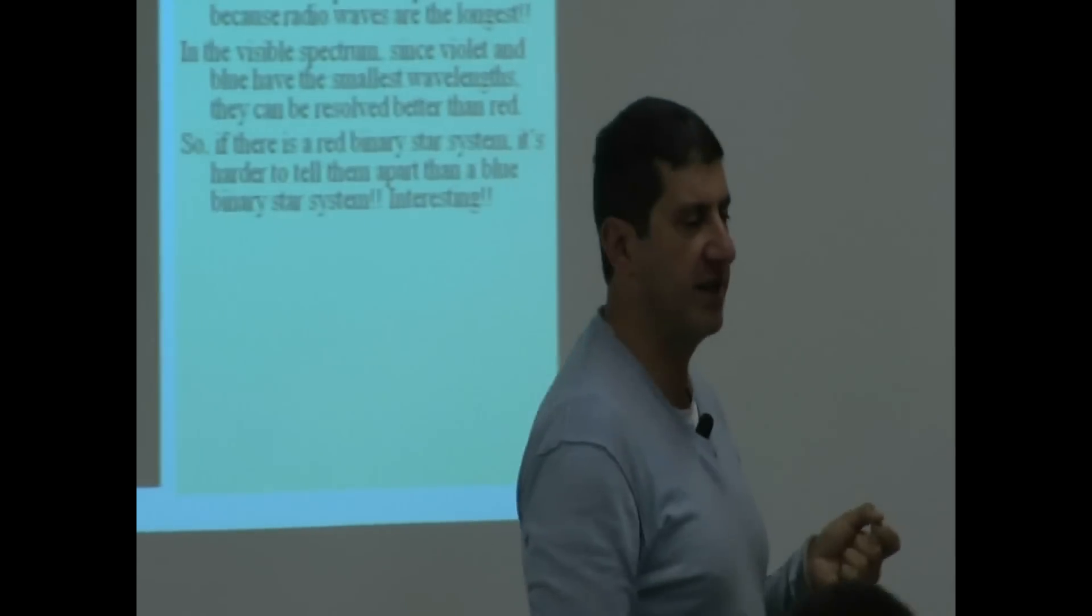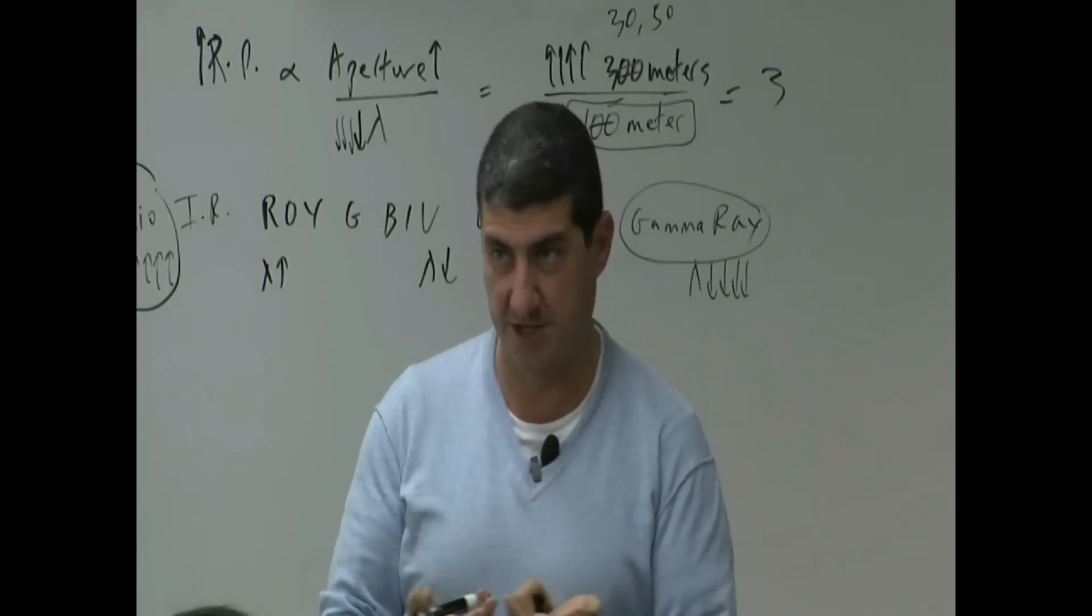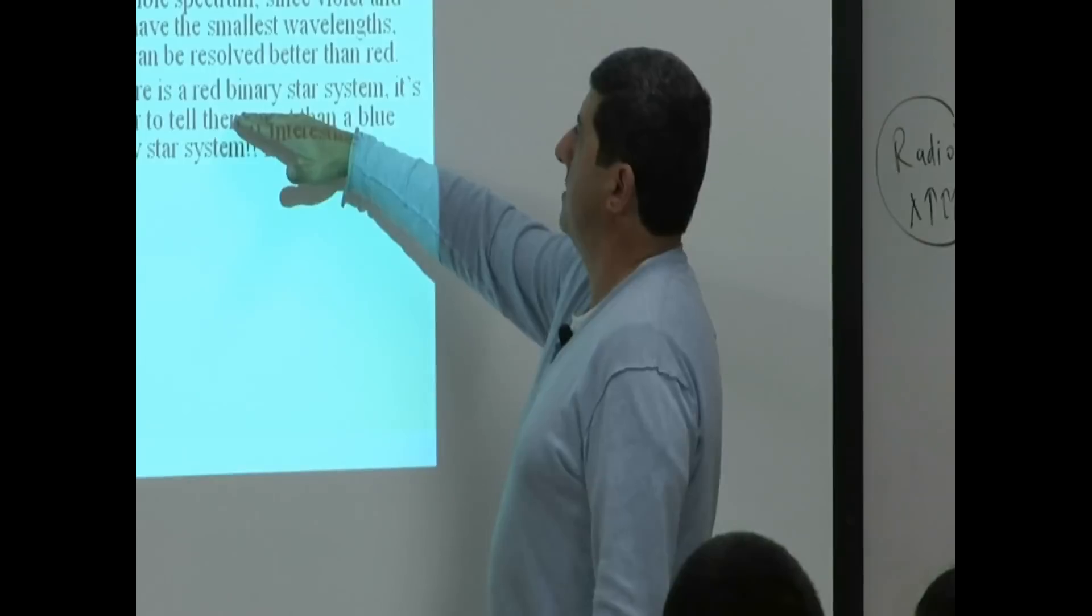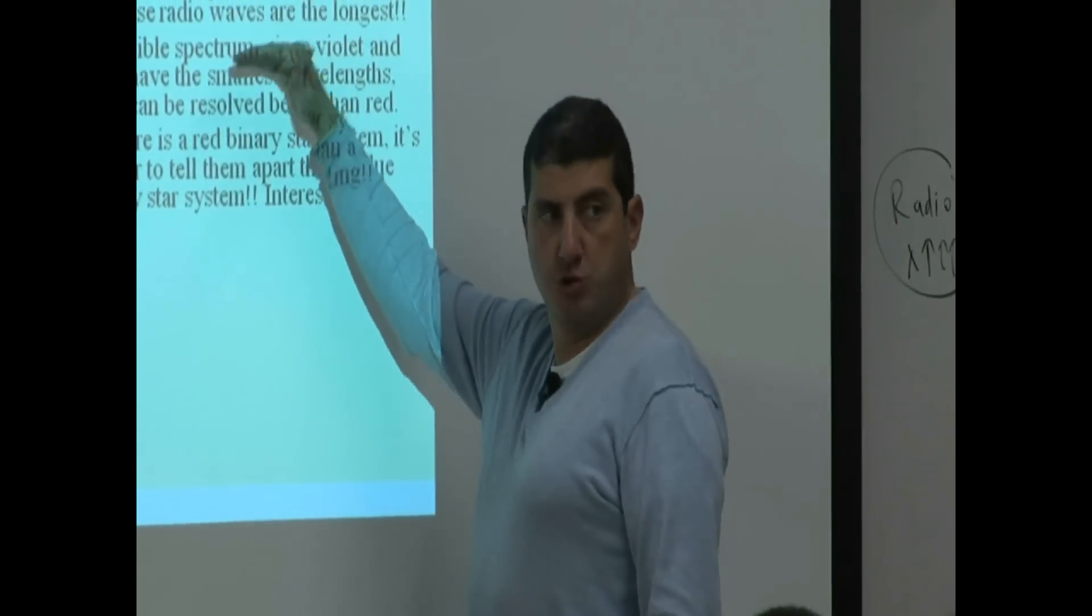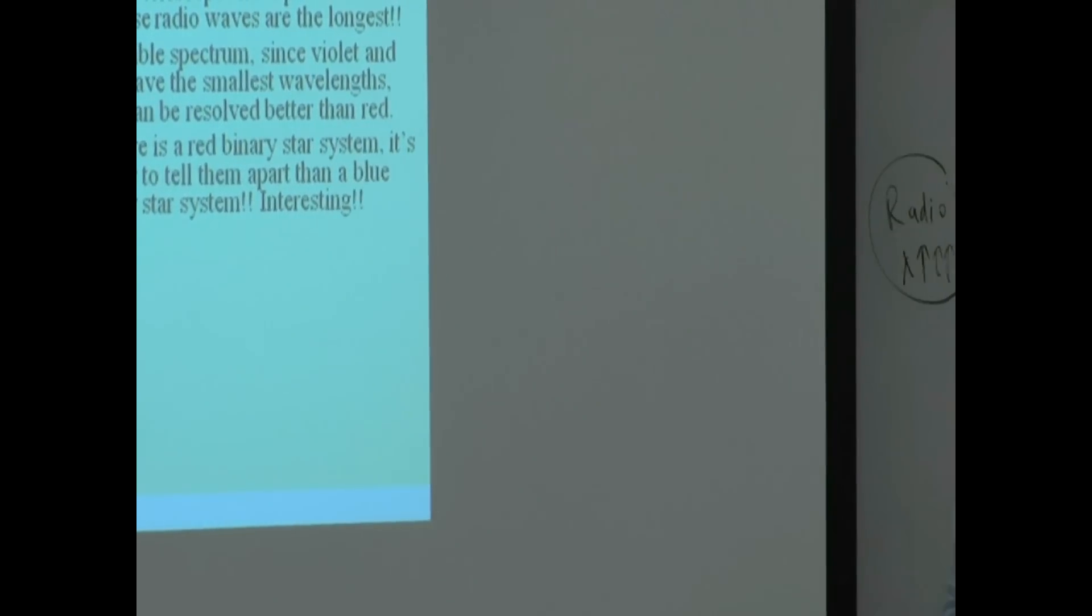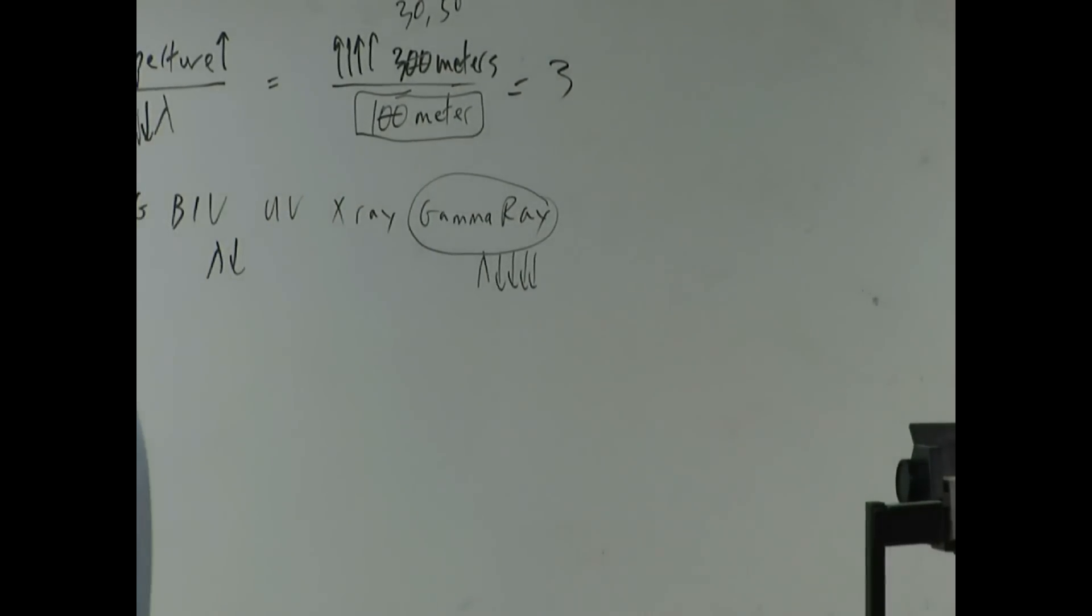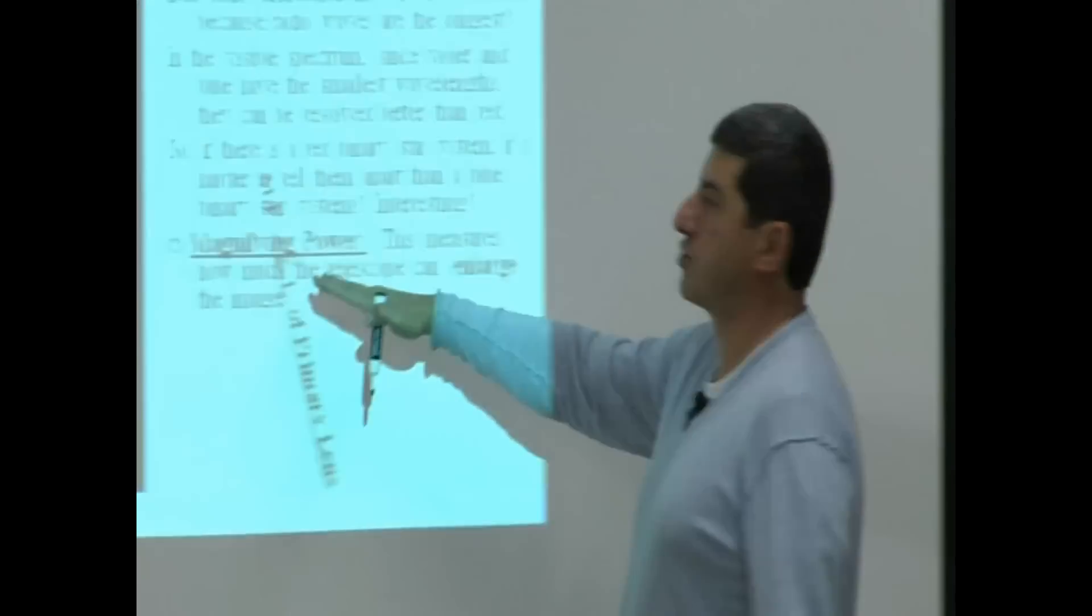Why? Because the reds will look fuzzier. They will not look as clear. So, that's one effect of the fact that you can see blue better than you can see red, okay? Now, going on to the next power of a telescope.